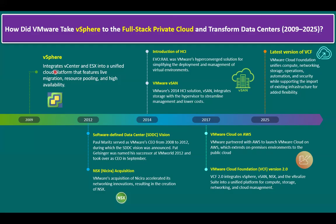Overall, this evolution from 2009 to 2025 shows how VMware continues to innovate to help organizations modernize infrastructure, improve agility, and operate with the efficiency of public cloud while retaining the control of a private data center. It gives you flexibility to integrate with public cloud hyperscalers — AWS, Azure, Google Cloud, Oracle, and more. VCF can run on-premises, in a private environment, with public cloud integration, on edge sites, and sovereign cloud. We have so much flexibility with the latest version of VCF 9.0.